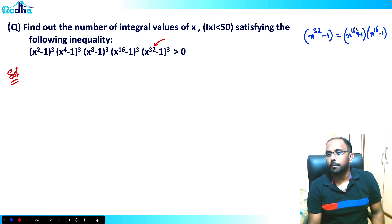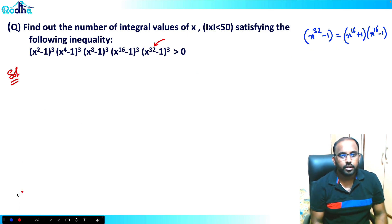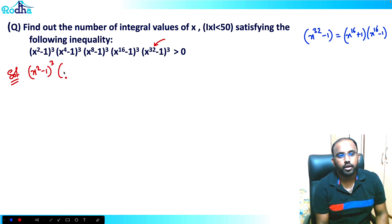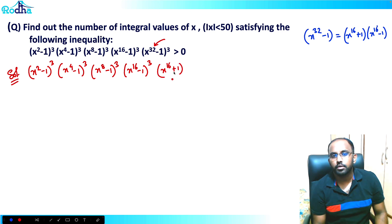That is equal to (a + b)(a - b). So similarly, if I solve it, I'll write: (x² - 1)³ · (x⁴ - 1)³ · (x⁸ - 1)³ · (x¹⁶ - 1)³. Now x³² can be written as (x¹⁶ + 1)³ · (x¹⁶ - 1)³, and that is greater than 0.